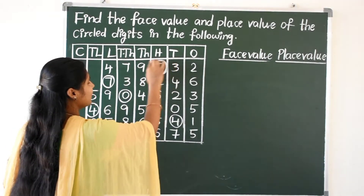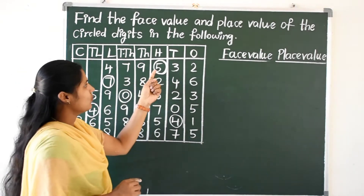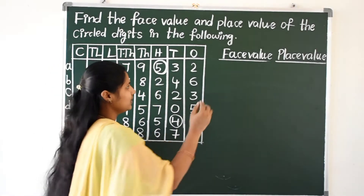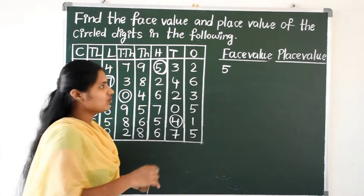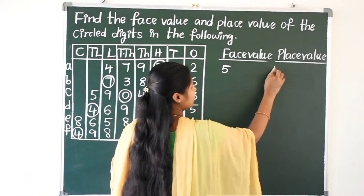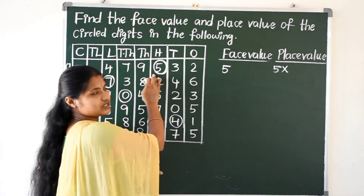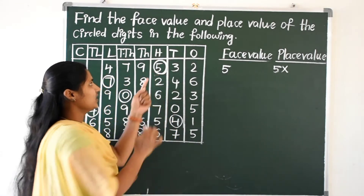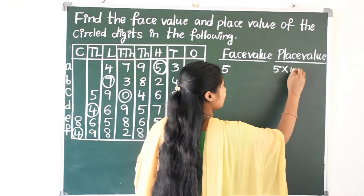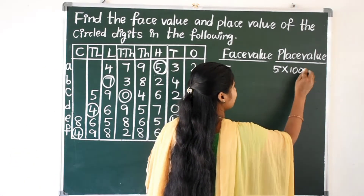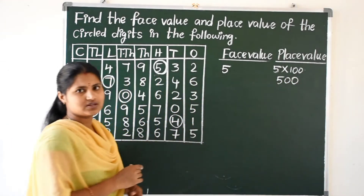We have to find the place value and face value of five. The circled digit is five. The face value of five is five. And the place value of five — face value into its position. The position of five is hundreds, so five into 100 gives 500. The place value of five is 500.